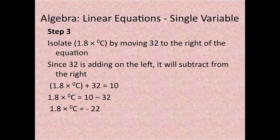Step 3: Isolate what's in the parentheses, which is 1.8 times degrees centigrade, by moving 32 to the right of the equation. Since 32 is adding on the left, it will subtract from the right. So you have 1.8 times degrees centigrade plus 32 equals 10. 1.8 times degrees centigrade equals 10 minus 32. And then 1.8 times degrees centigrade equals minus 22.